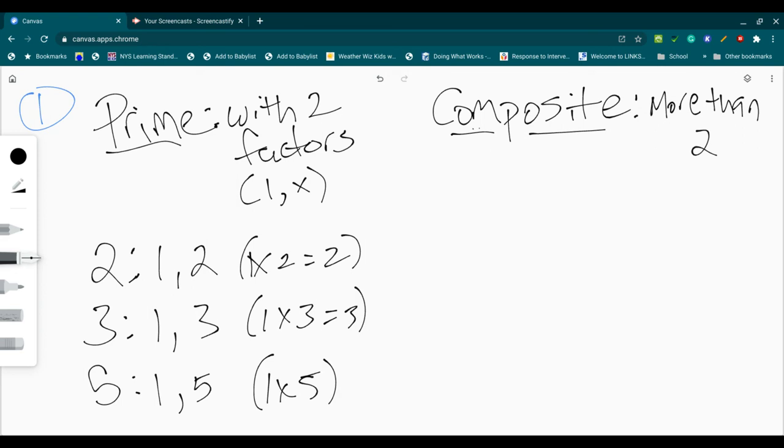We can go up to 47. We can go up to 37. Larger numbers. You just need to use your divisibility rules to determine quickly whether it's going to be a prime or a composite.